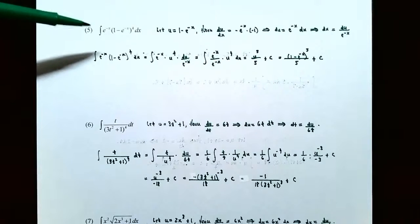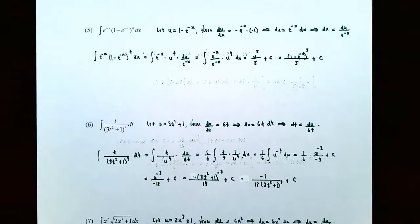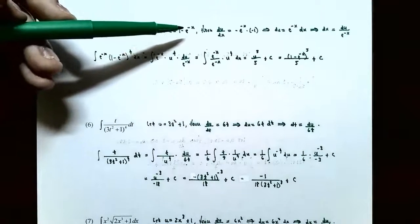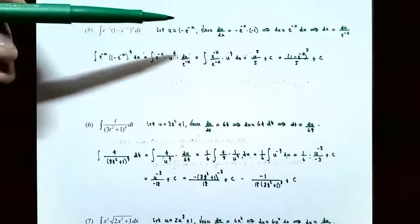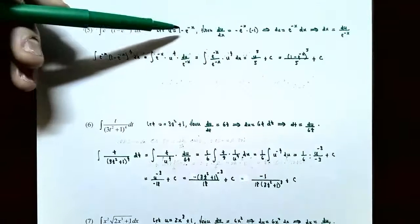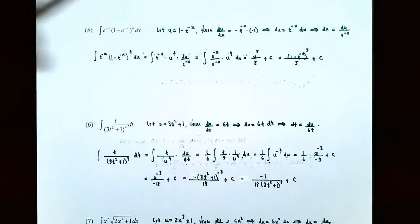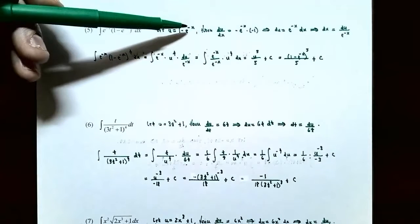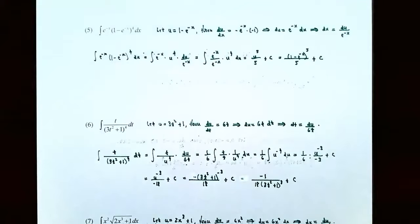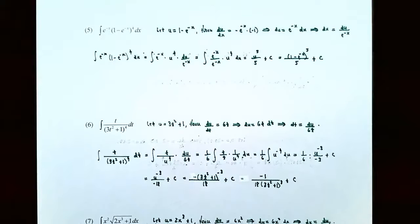Number 5: the indefinite integral of e^(−x) times (1 minus e^(−x))^4 dx. The inside function being raised to the fourth power is 1 minus e^(−x), so let u = 1 minus e^(−x). Taking the derivative using the chain rule: du/dx = e^(−x) times negative 1 (from the derivative of negative x), which simplifies to positive e^(−x). Multiplying both sides by dx: du = e^(−x) dx.